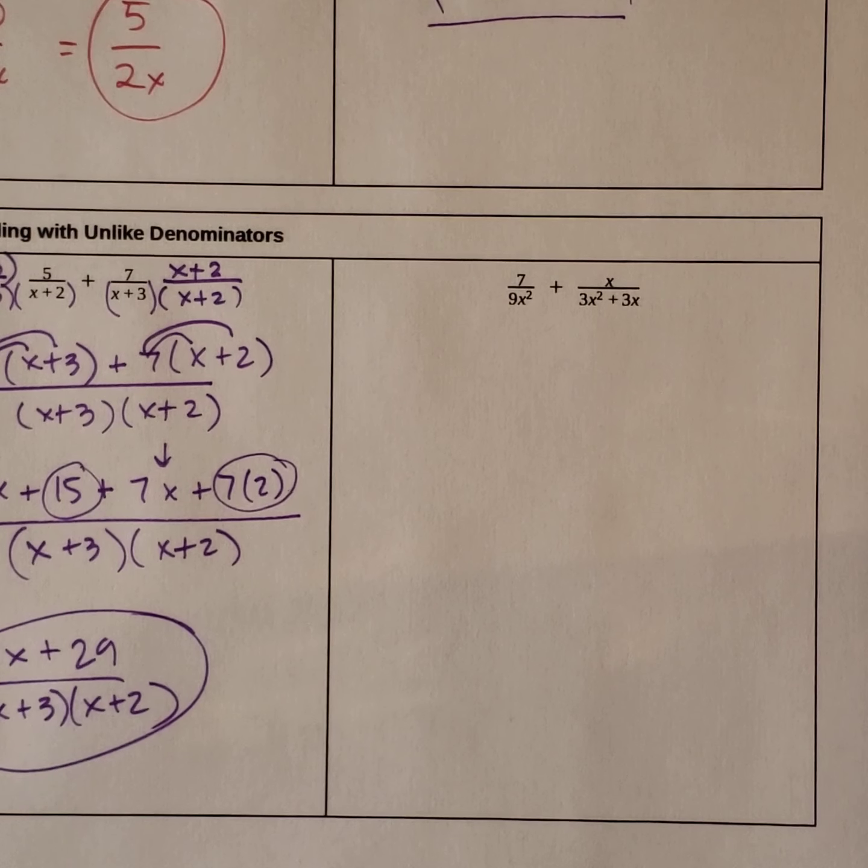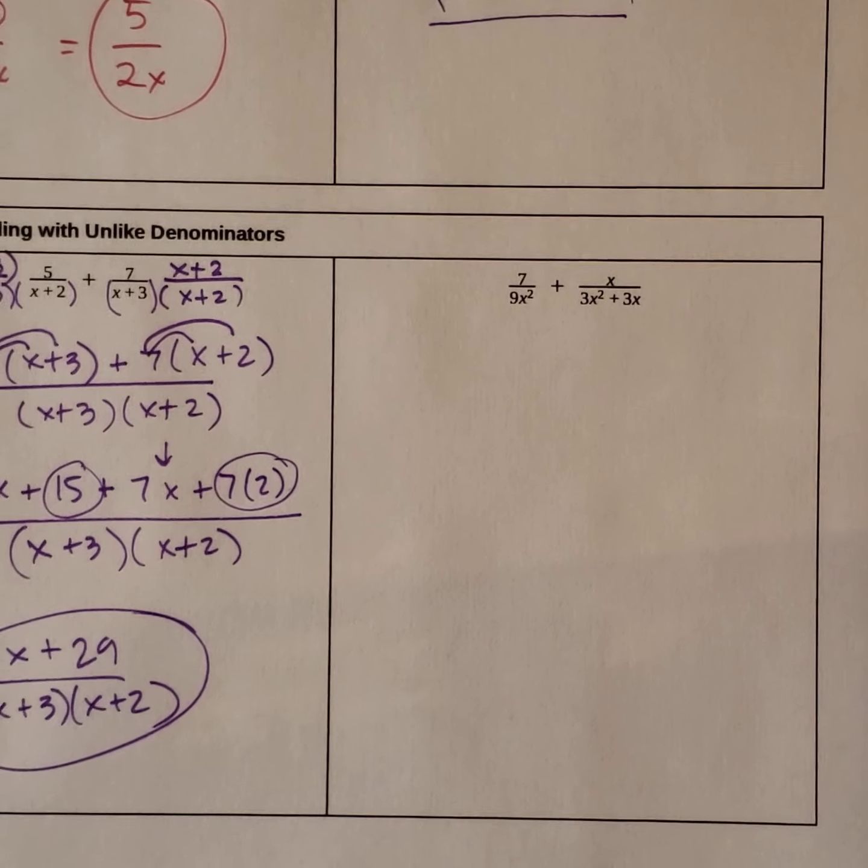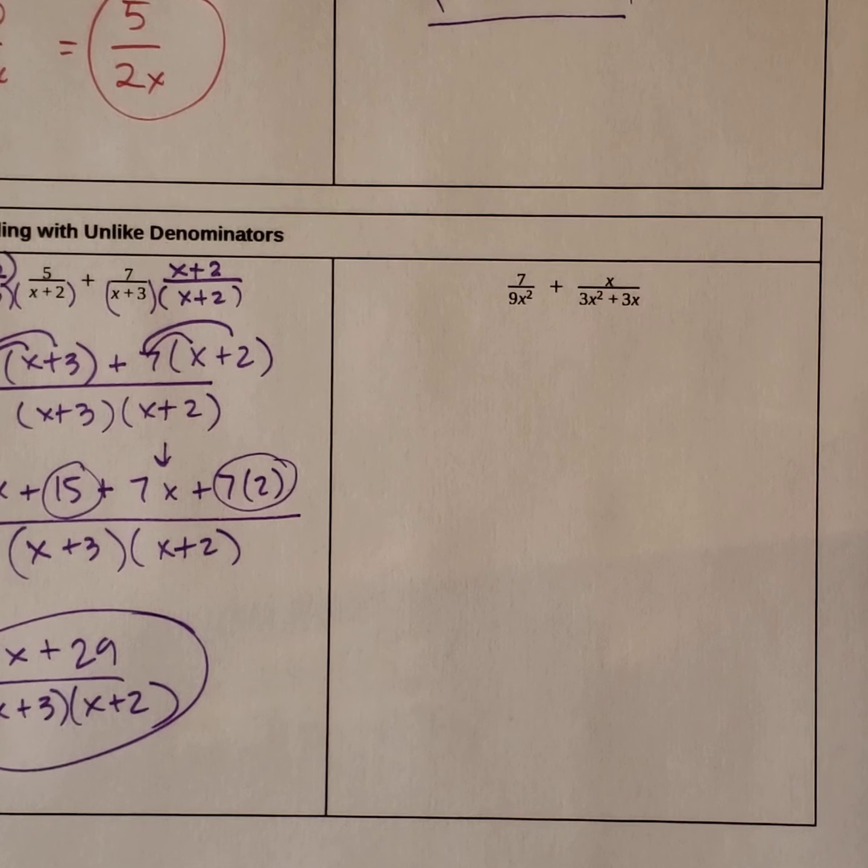7.4, example 2, part b. We have 7 over 9x squared plus x over 3x squared plus 3x.